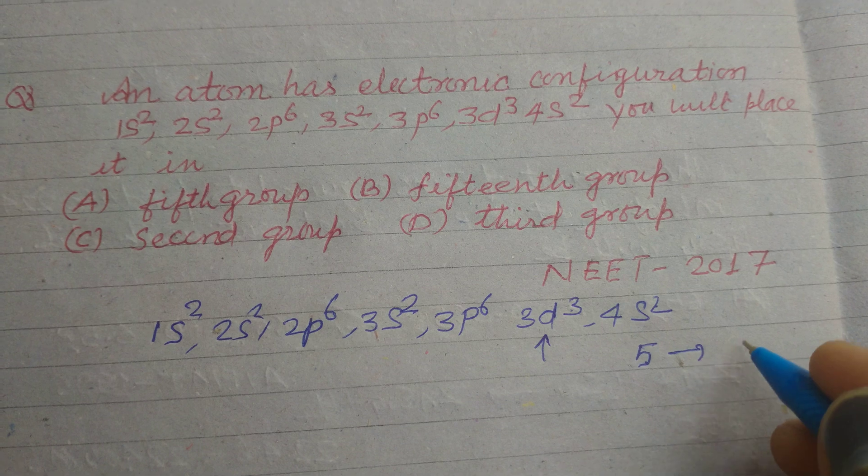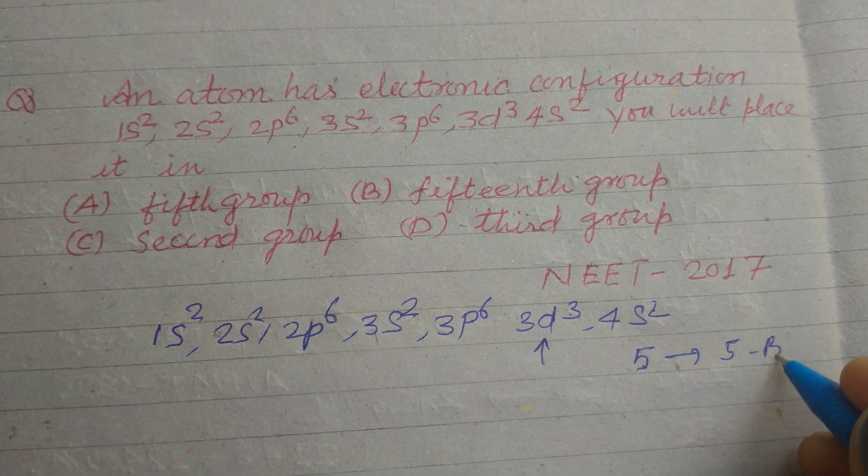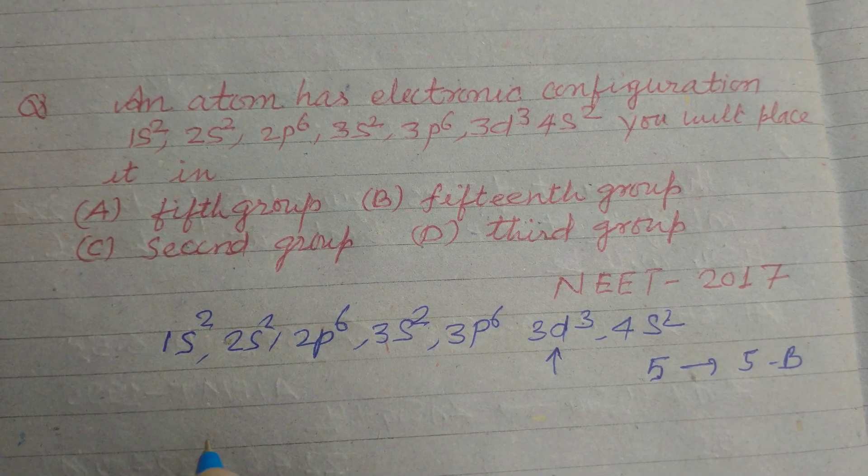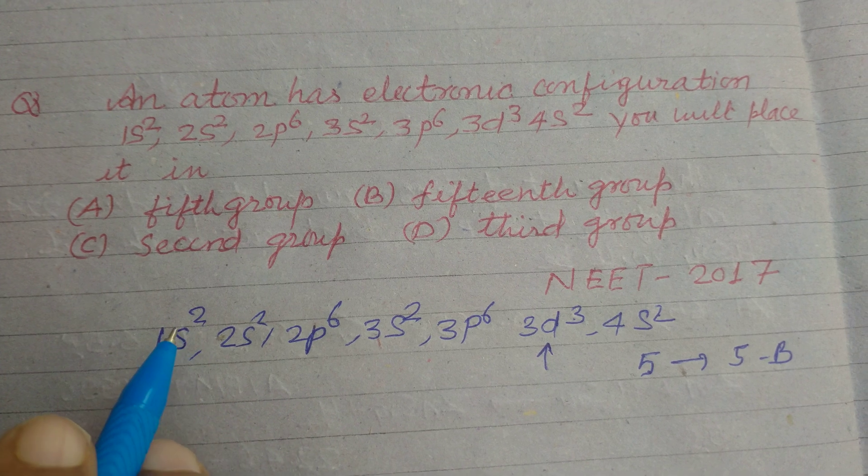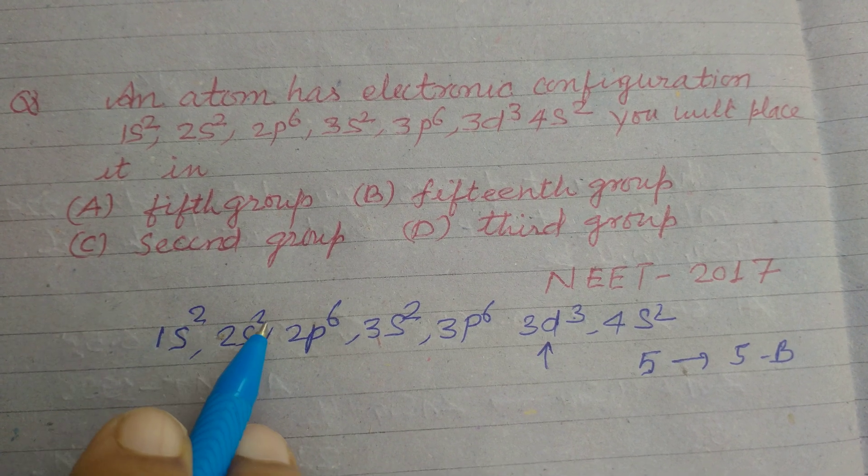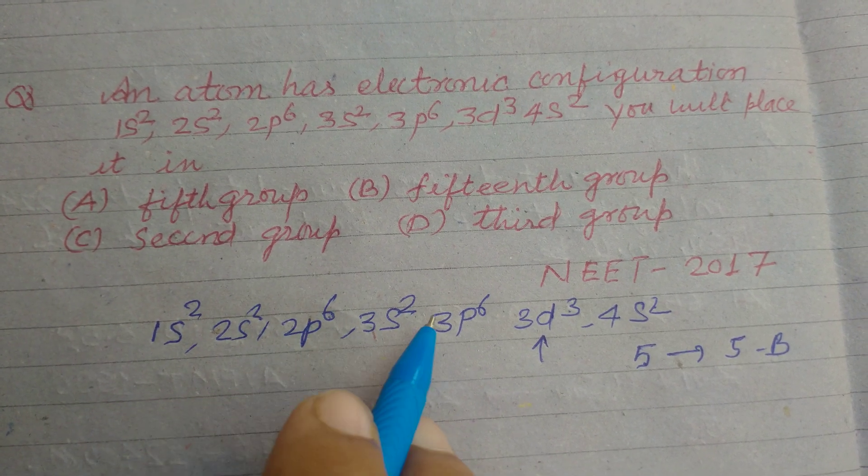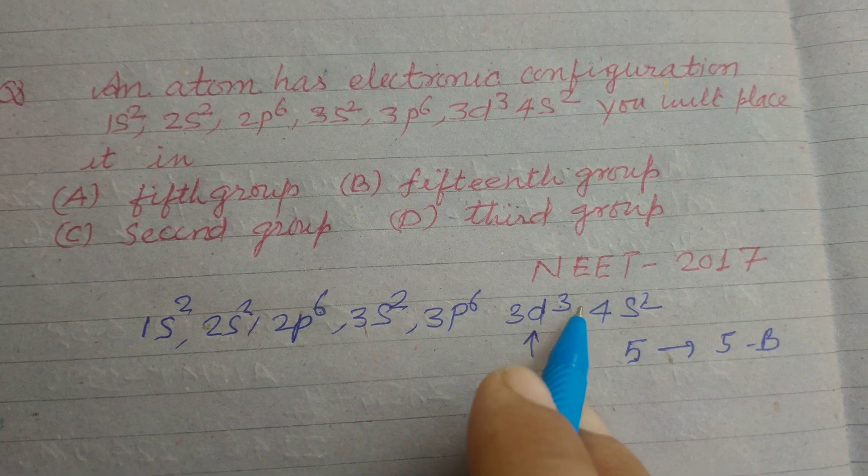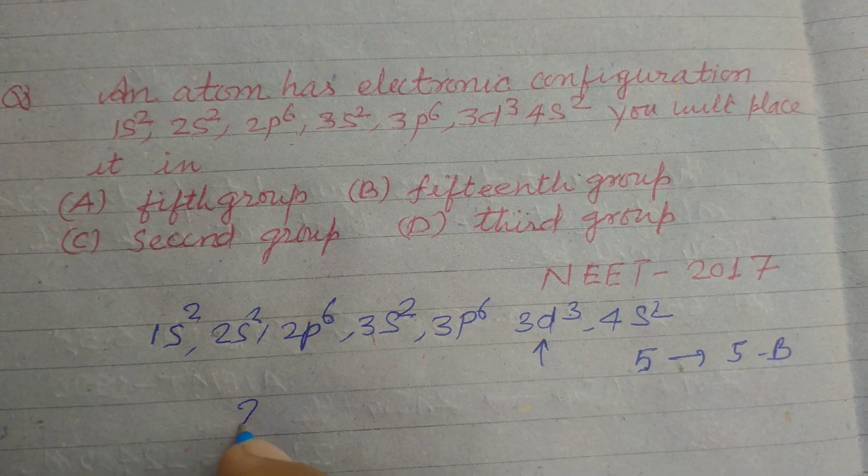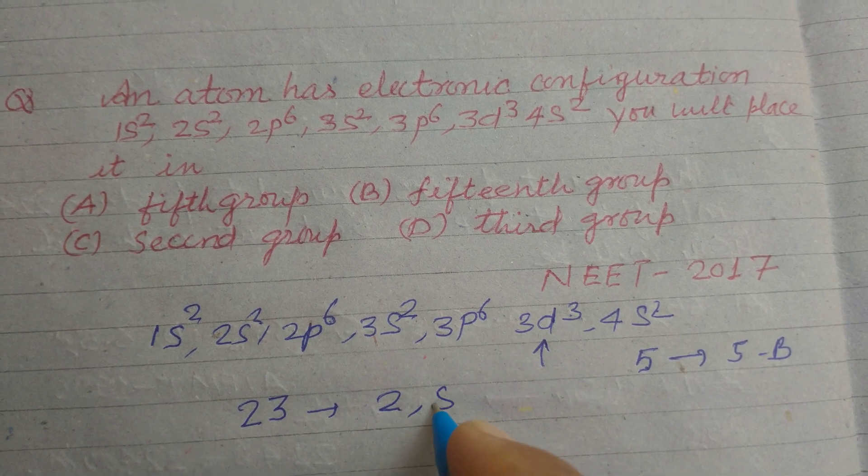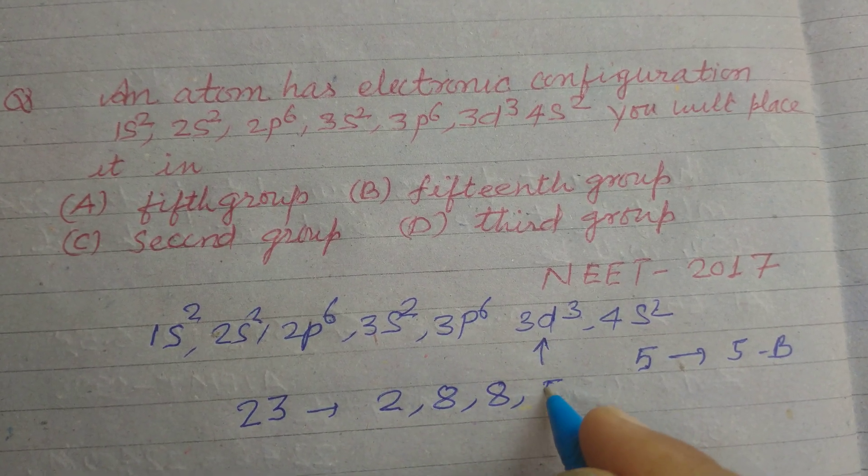So its group is fifth, V, or 5. Now we can take its electron atomic number: 2, 4, 6, 10, 12, 18, 23. So 23 can be distributed as 2, 8, 8, 5.